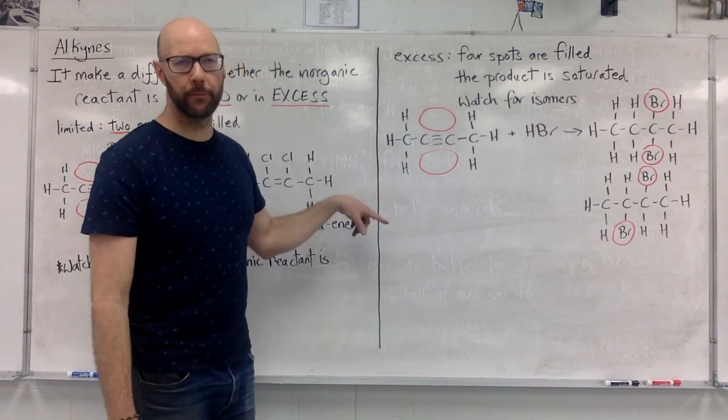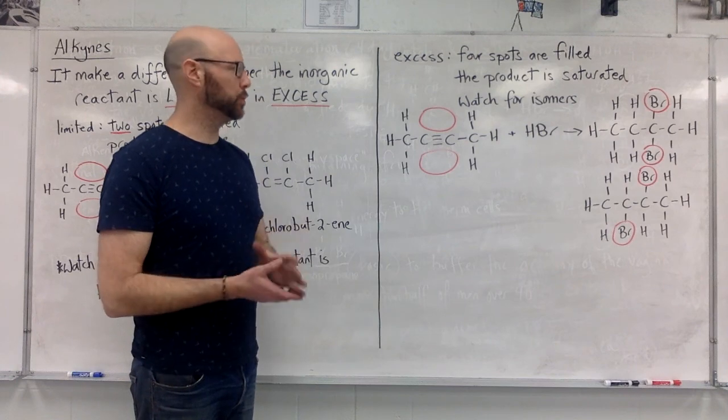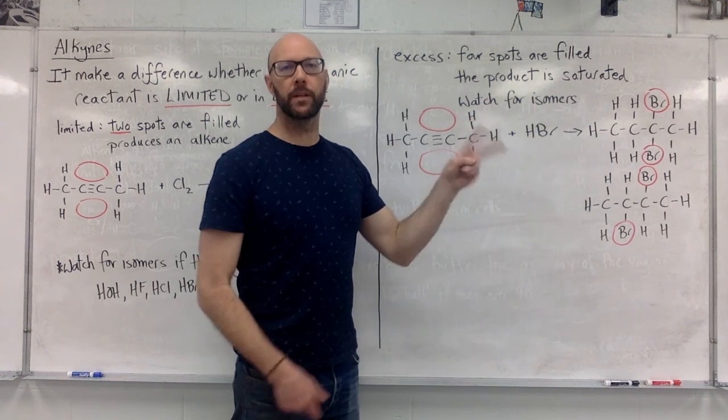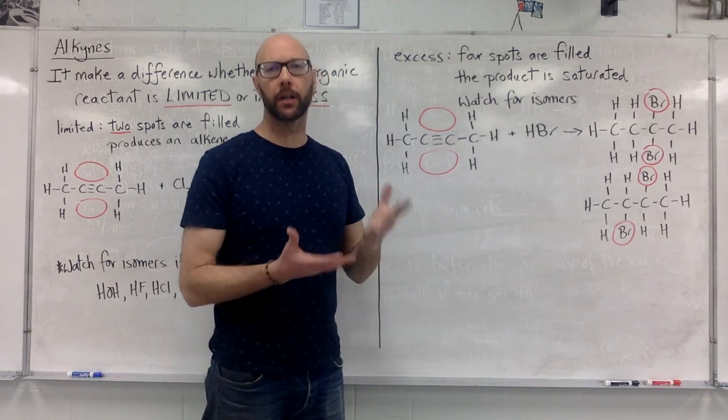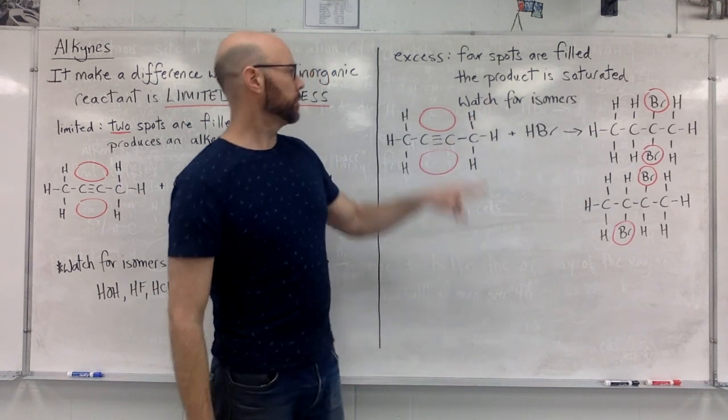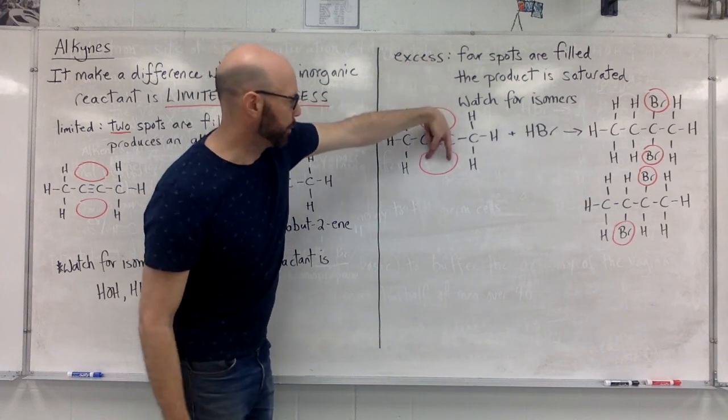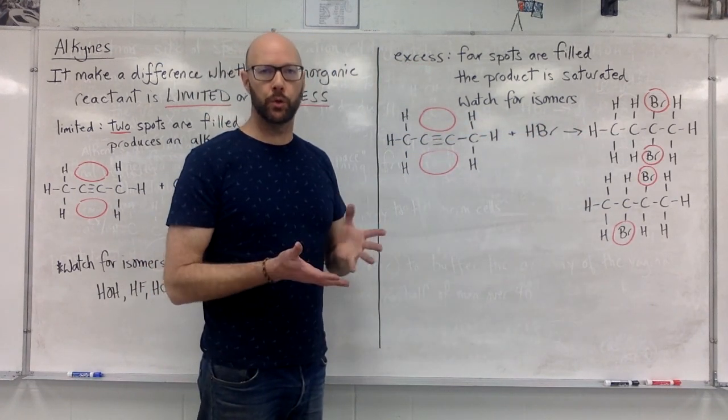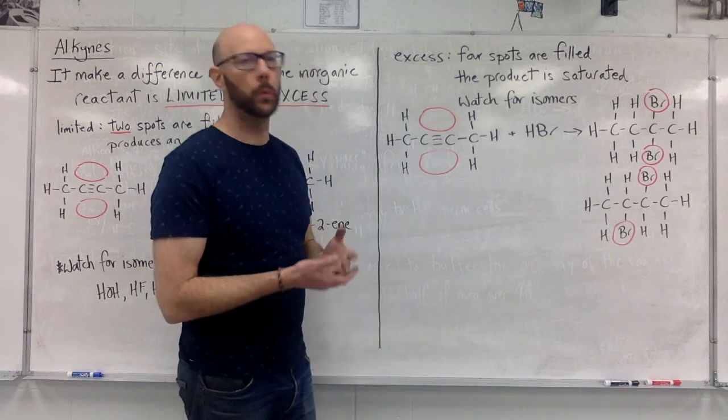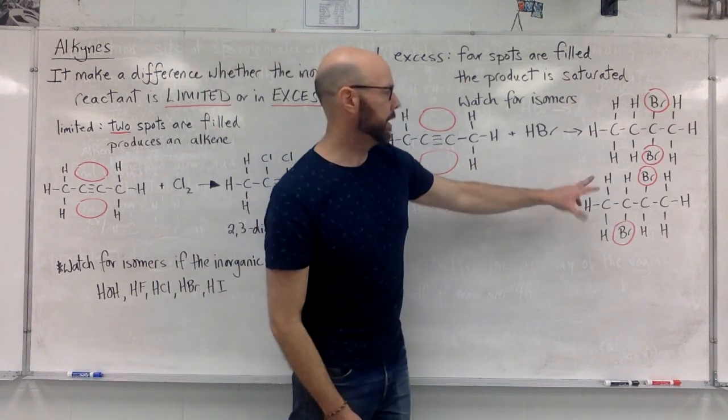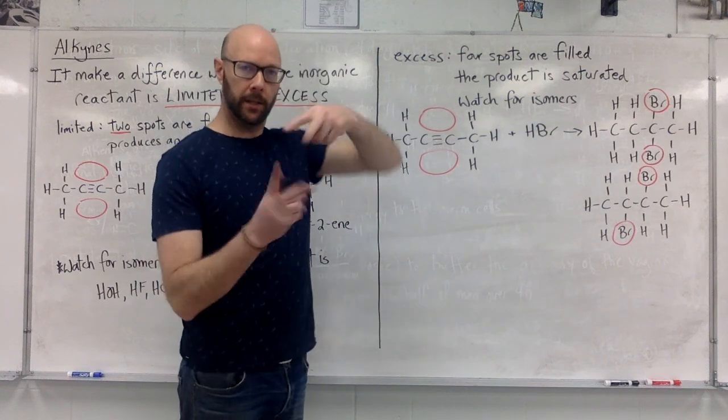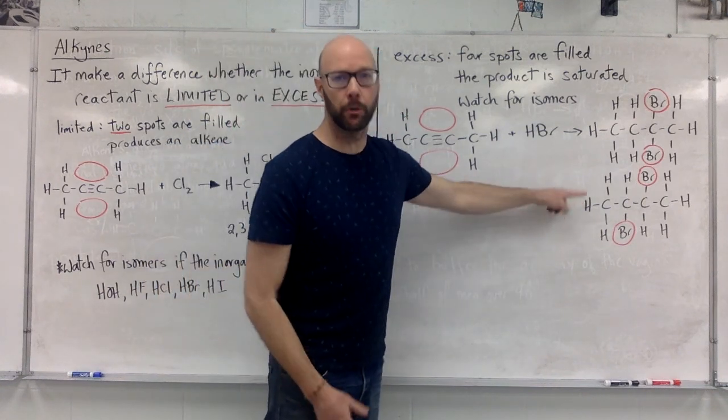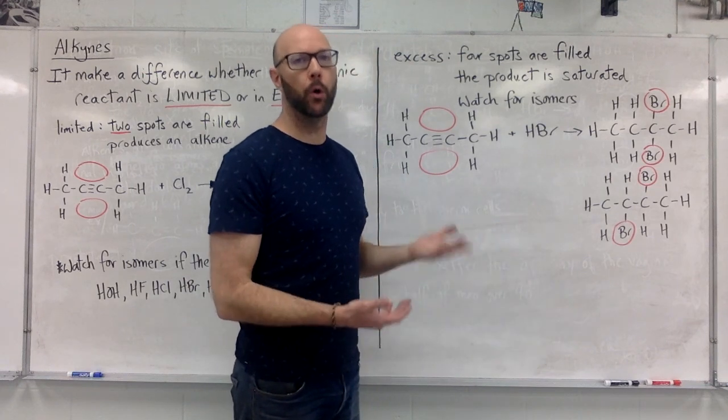Here I started with the same reactant but-2-yne. Now to show the isomers, I have HBr. Two different atoms. That's a signal that we are going to end up with isomers. So the HBr, they could have both gone in the same way. Here we end up with 2,2-dibromobutane. However, the HBrs could have gone in, they could have like flipped around. So we end up with a second isomer, 2,3-dibromobutane.